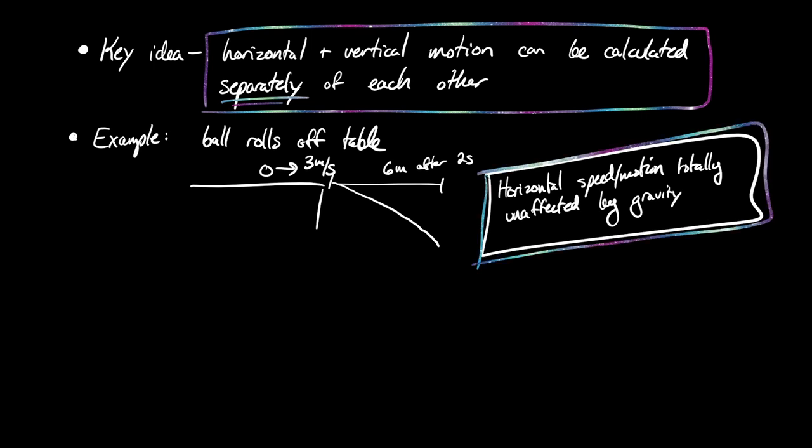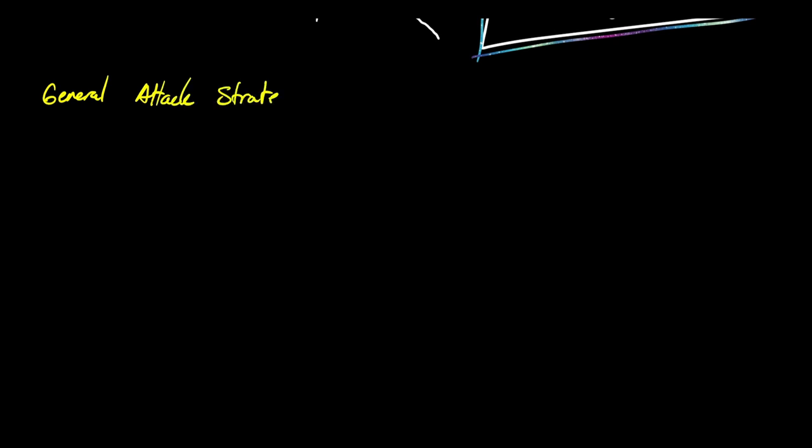We're going to use this so often it goes in Galaxy Pen. Our general attack strategy is this: almost all 2D kinematics problems are going to involve some sort of critical event — some time when something happens. Let me give you an example of that.